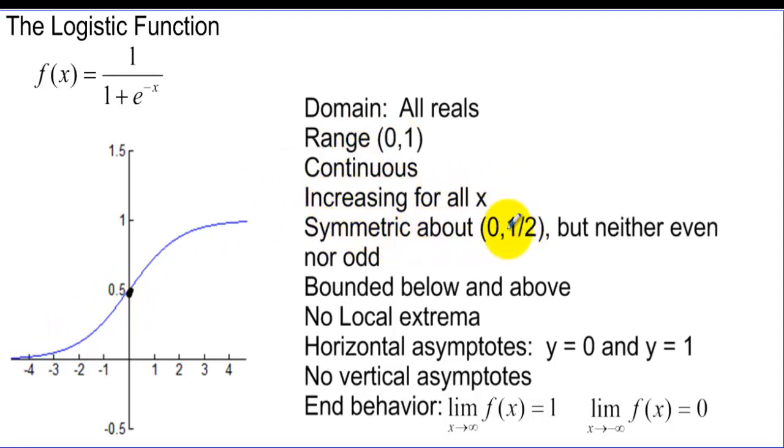There is symmetry about 0, 1.5 but neither even nor odd. Bounded below and above, there's no local extrema. We have horizontal asymptotes at y equals 0. You can't have less than 0 fish. And y equals 1. No vertical asymptotes.